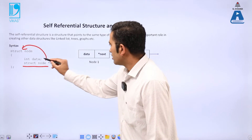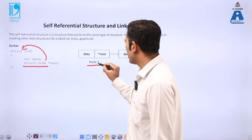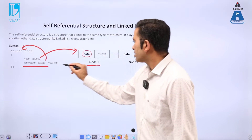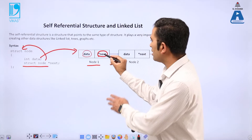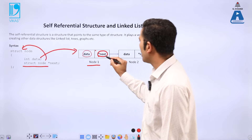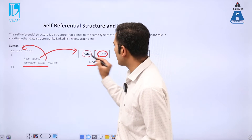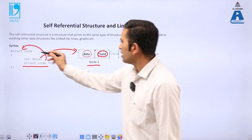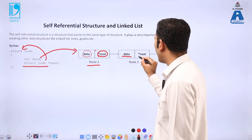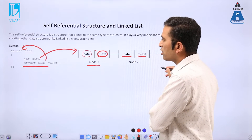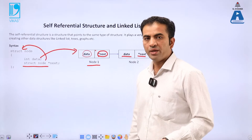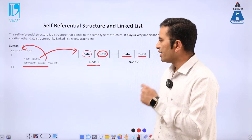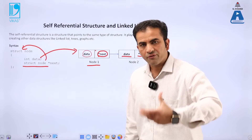Now visualize this self-referential structure: data is a member — this is node 1. Star next is a struct node type pointer, and the meaning of star next is that it is assigned to another node. That another node also consists of data and then star next, and this process continues until we provide a stopping condition. This is the concept of a self-referential structure.